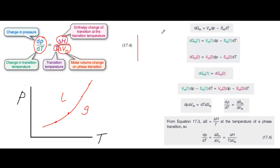The starting point for deriving this equation is dGm equals Vm dP minus Sm dT, where dGm is a small change in the molar Gibbs energy. You can see in the box where this equation comes from. We can write an equation like this for each of the two phases — call them phase one and two, where one might be the liquid and two might be the gas. The equations have the same form and they're written here.